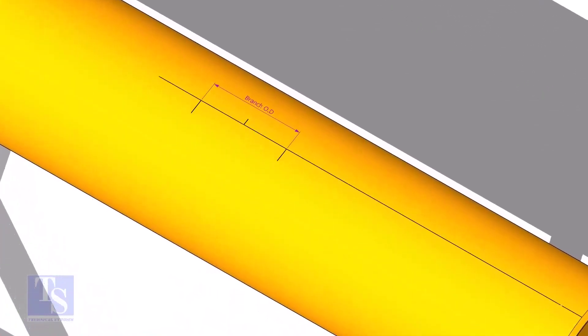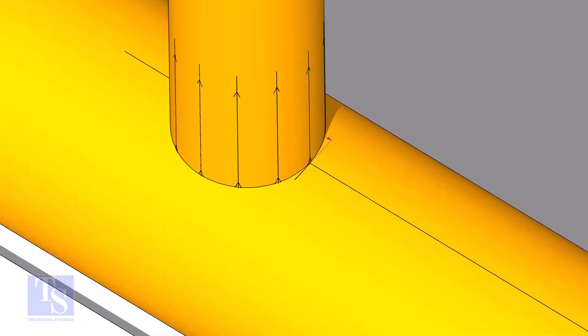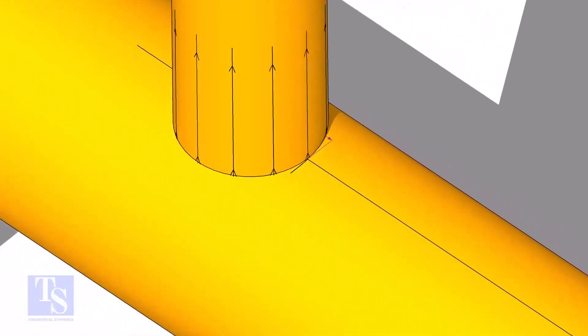Mark the branch OD on the center line of the header. Put the branch exactly on this marking, matching the branch center line.